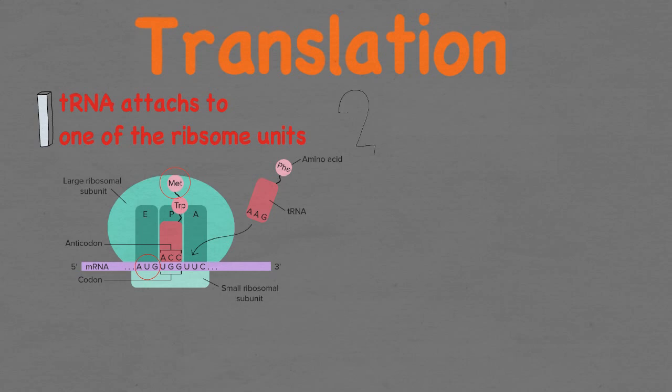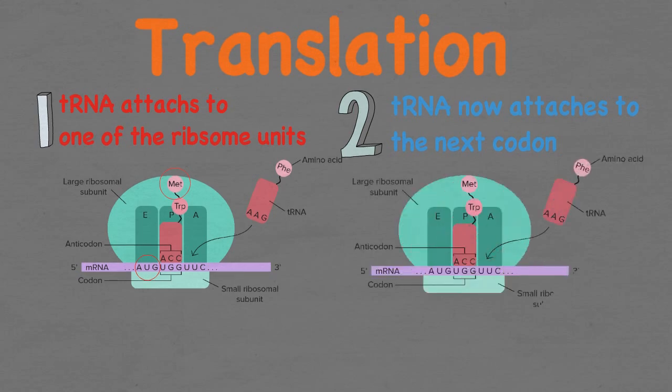As you can see in the picture, another tRNA now attaches to the next codon UGG, matching it with its anti-codon ACC. The tRNA always attaches to the codon on the mRNA with an anti-codon — the opposite sequence. U and A connect while C and G connect.